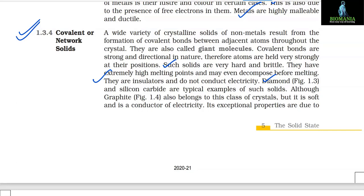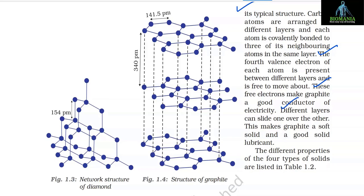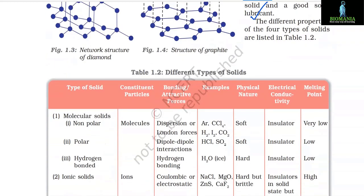Diamond and silicon carbide are typical examples of covalent solids. Graphite also belongs to this class but is soft and a conductor of electricity due to its unique structure: carbon atoms are arranged in different layers, each atom covalently bonded to three neighboring atoms in the same layer, while the fourth valence electron of each atom is free to move between layers. These free electrons make graphite a good conductor of electricity, and the layers can slide over one another, making graphite a soft solid lubricant.